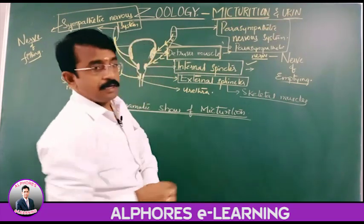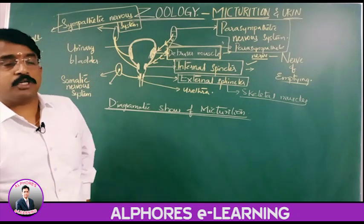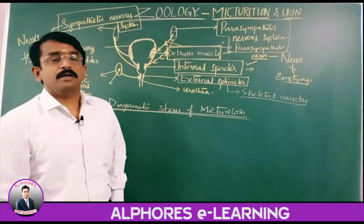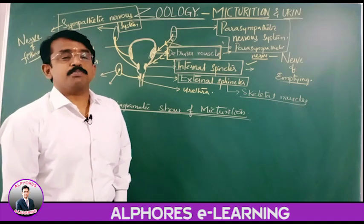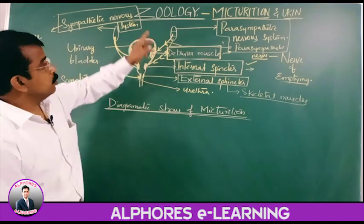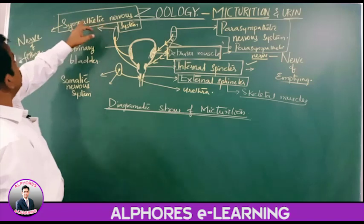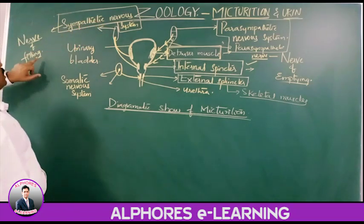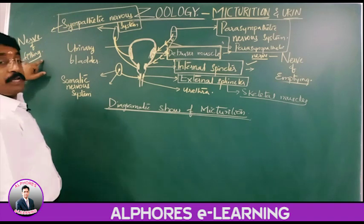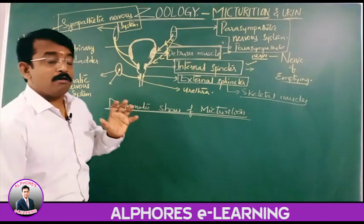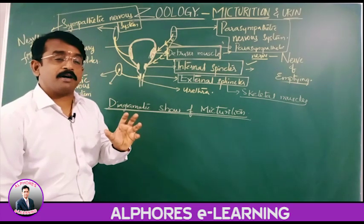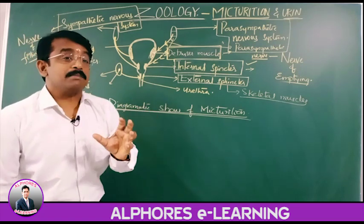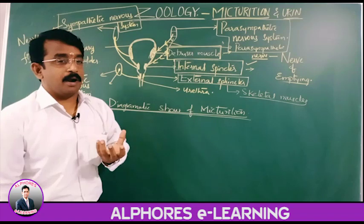We discussed the regulation of excretion where sympathetic and parasympathetic are involved. The sympathetic nervous system inhibits the emptying of the urinary bladder — meaning it promotes the filling of the urinary bladder.